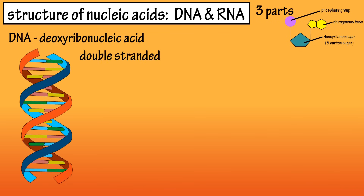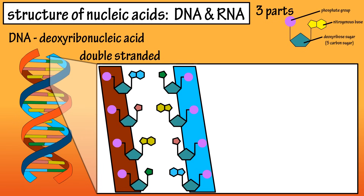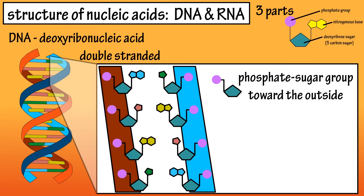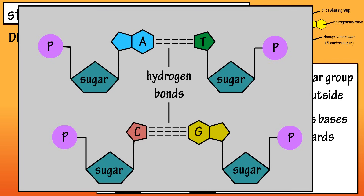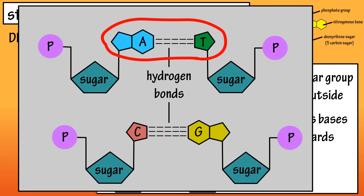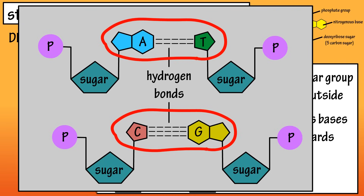DNA is a double-stranded nucleic acid, and its molecules take on a helical formation. Each helical chain has its phosphate sugar group toward the outside, and the nitrogenous bases facing inwards towards the nitrogenous bases of the other chain. Each of the bases on one chain is joined to the base of the other chain through either two or three hydrogen bonds. Thymine and adenine are joined by two hydrogen bonds, and cytosine and guanine are joined by three hydrogen bonds. Thymine and adenine are always a base pair, and cytosine and guanine are always a base pair.